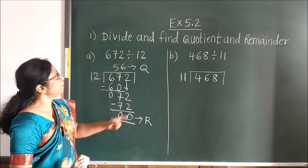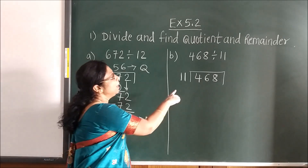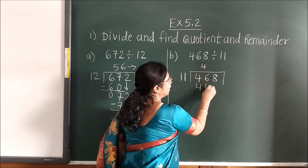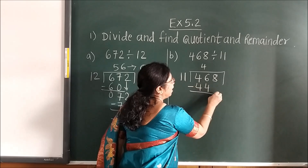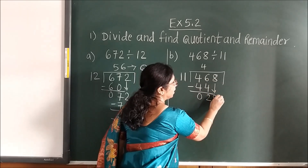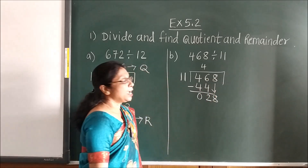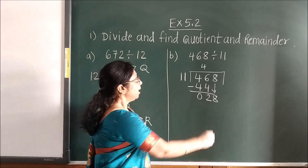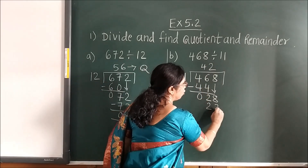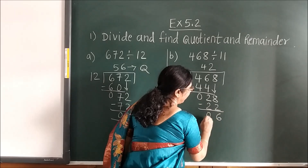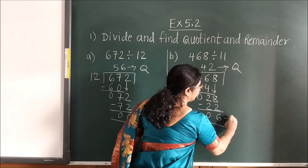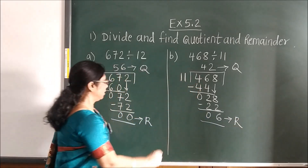Same here: 11 fours are 44. Subtract — you get 2. Bring the next number down. Now 11 twos are 22. Remainder is 6. This is your quotient and this is your remainder.